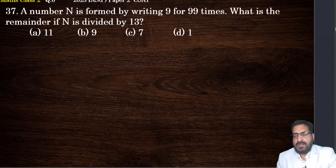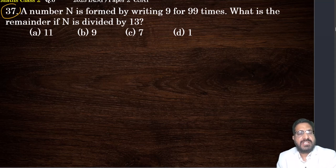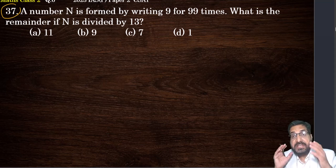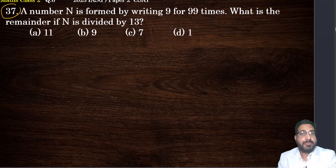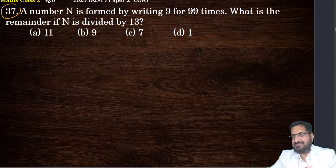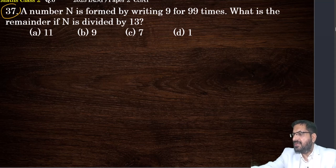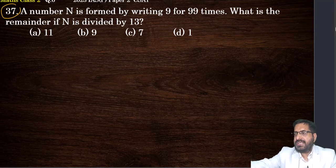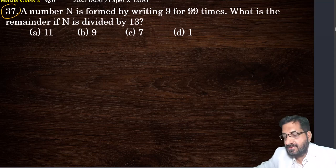Moving to next question, question number 6 — question number 37 in D-series of the actual question paper. What is this? A number N is formed by writing 9 for 99 times. What is the remainder if N is divided by 13? It seems very difficult, right? No, it's very simple. These are all problems on remainders and patterns, nothing else.